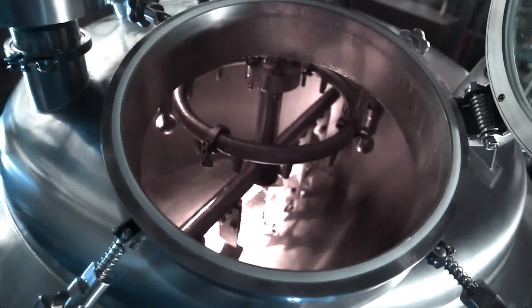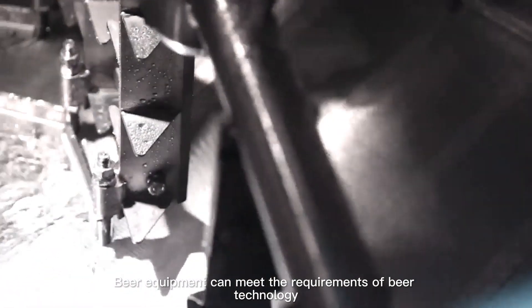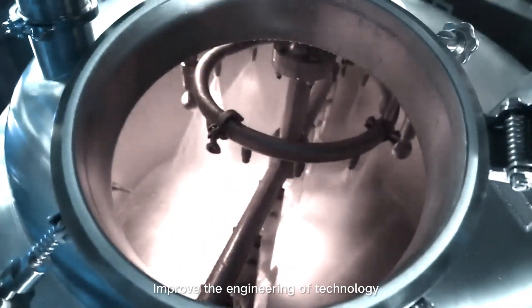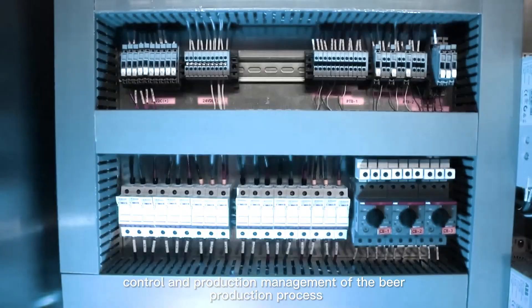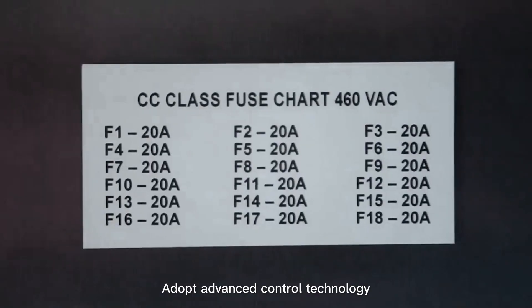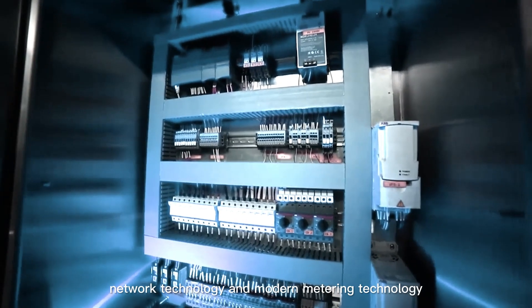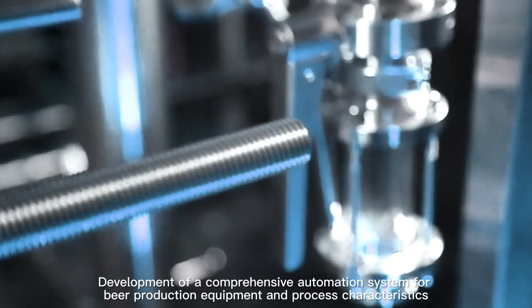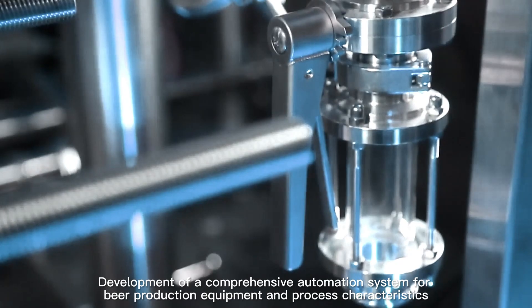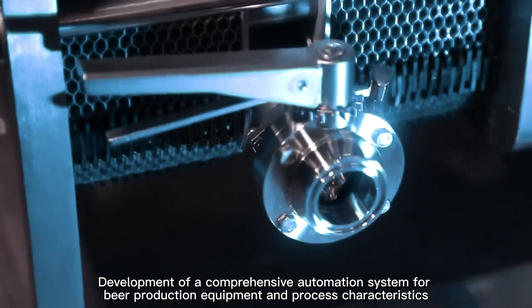Semi-automatic control: Beer equipment can meet the requirements of beer technology. Improve the engineering of technology, control, and production management of the beer production process. Adopt advanced control technology, network technology, and modern metering technology. Development of a comprehensive automation system for beer production equipment and process characteristics.